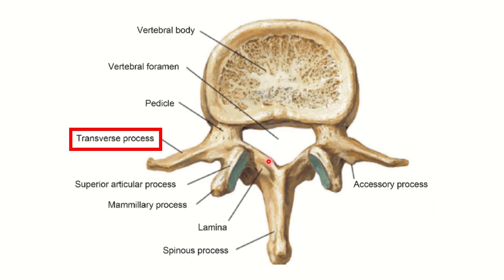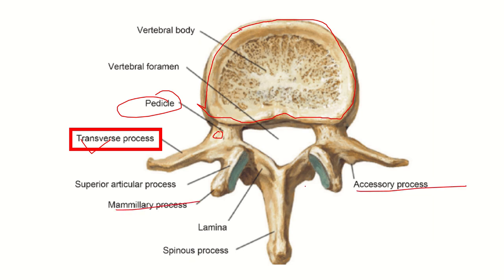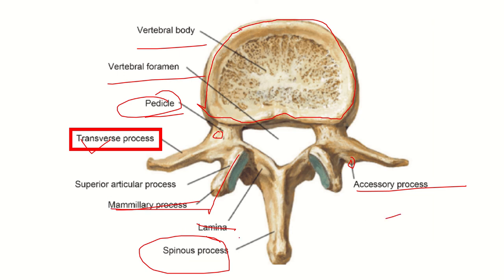In this picture we can see details about the lumbar vertebra. It has a large kidney-shaped body. There is the pedicle, and just behind the pedicle there is the transverse process on both sides. We can also see the mammary process and accessory process, as well as the lamina and spinous process. The lumbar vertebra has a vertebral body, vertebral foramen, pedicle, transverse process, mammary and accessory processes, lamina, spinous process, and superior and inferior articular processes.